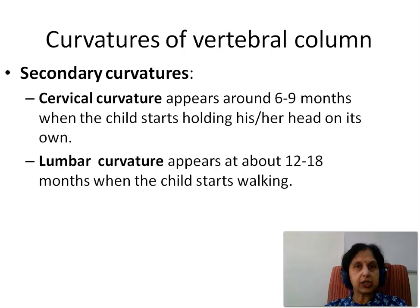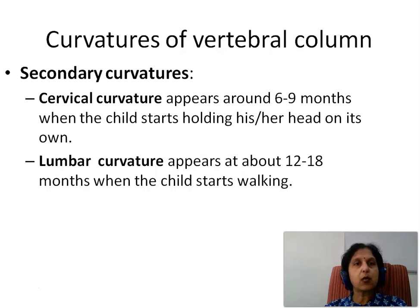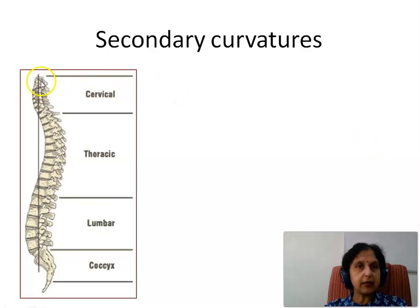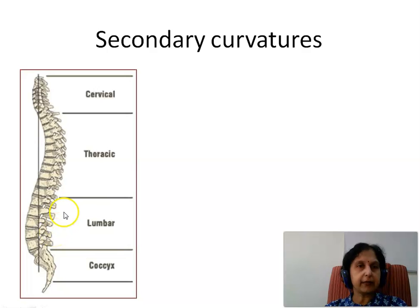The secondary curvatures are seen in the cervical and the lumbar region. Cervical curvature appears around 6 to 9 months when the child starts holding his or her head on its own. The lumbar curvature appears at about 12 to 18 months when the child starts walking. The cervical and lumbar are the secondary curvatures while the thoracic and the sacral part are the primary curvatures, which are concave forwards.